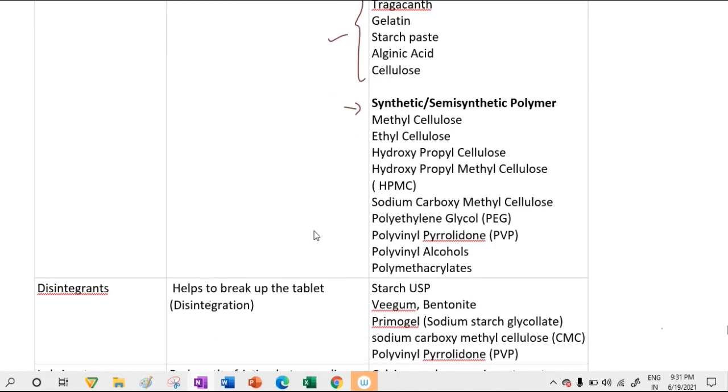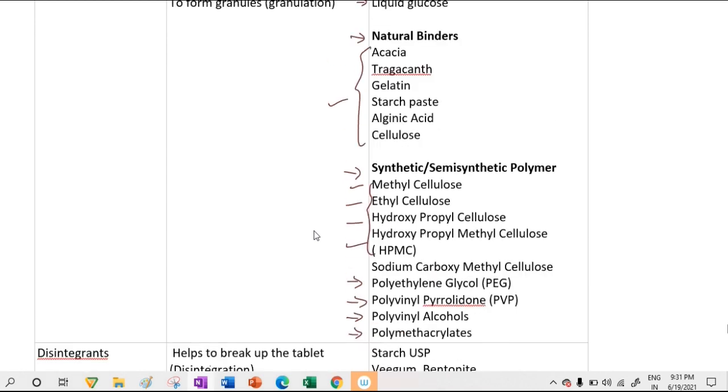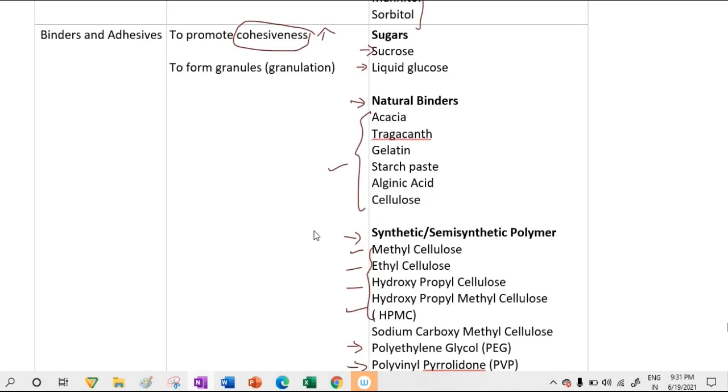Synthetic or semi-synthetic binders include cellulose derivatives such as methyl cellulose, ethyl cellulose, and hydroxypropyl cellulose, as well as polyethylene glycol, polyvinyl pyrrolidone, polyvinyl alcohols, and polymethacrylate.